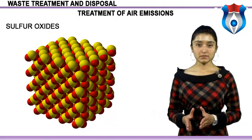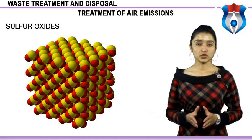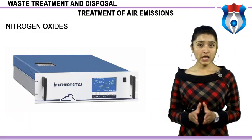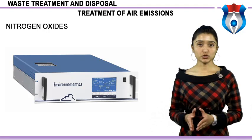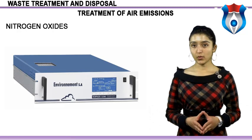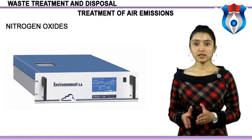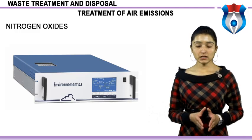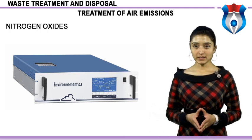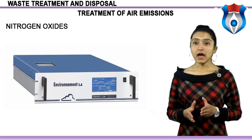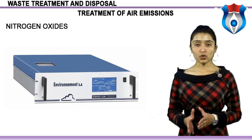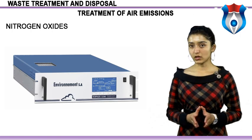Nitrogen oxides: generated from high-temperature combustion and from the combustion of fuels containing nitrogen in crude oil. Unfortunately, these emissions are difficult to treat and may require specially designed equipment. Equipment to minimize nitrogen oxide emissions includes low-NOx burners, flue gas recirculation, selective catalytic reduction devices, and selective non-catalytic systems. The amount of nitrogen oxides emitted can also be lowered by reducing the amount of oxygen in the combustion process.